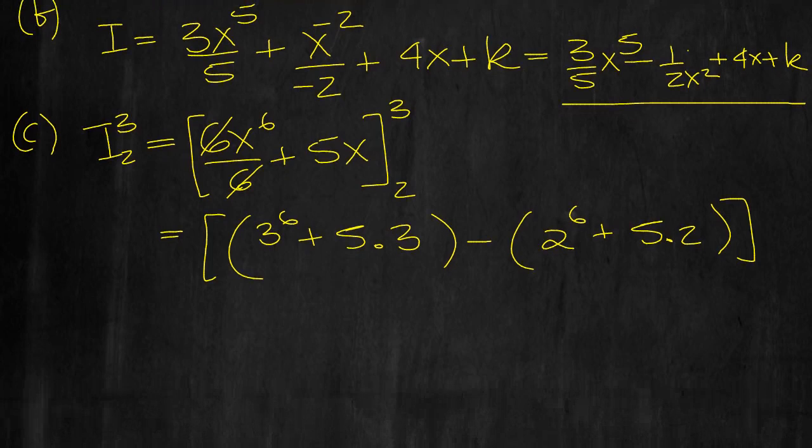So that's the numbers. 3 to the 6 is the same as 9 cubed, isn't it? And 9 cubed is 81 times 9. 9 times 8 is 72, and 9 times 1 is 9, so it's 729. Tap it in the calculator if you need to, plus 15, minus, this is 4 cubed which is 64, and then minus the 10 as well.